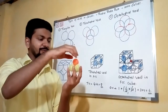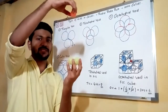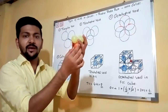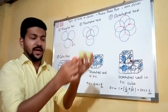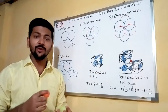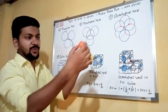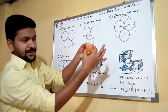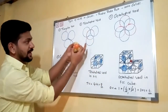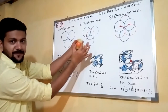A tetrahedral void can be produced in two ways: by placing a particle at the top or at the bottom. So if you have a triangle and one particle placed over it, it will produce a tetrahedral void — you can identify it simply by looking at the structure.